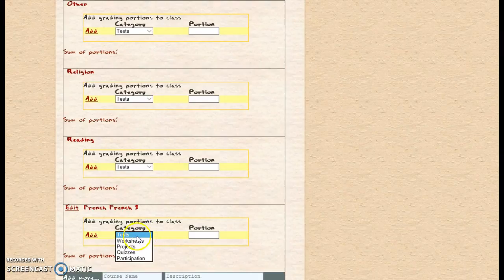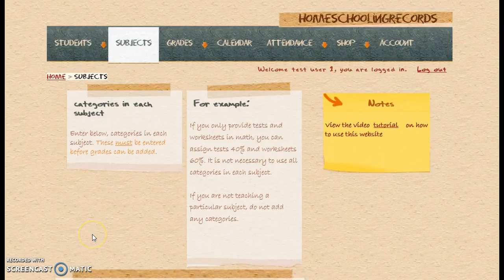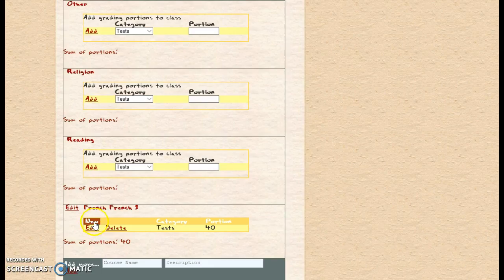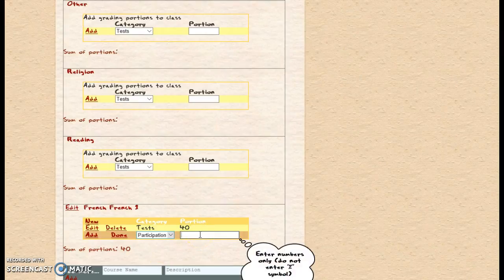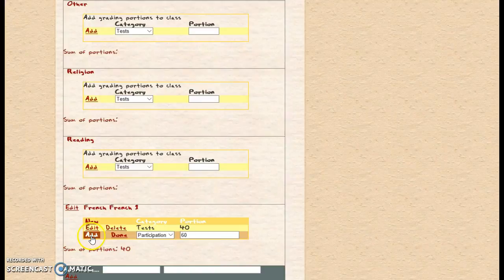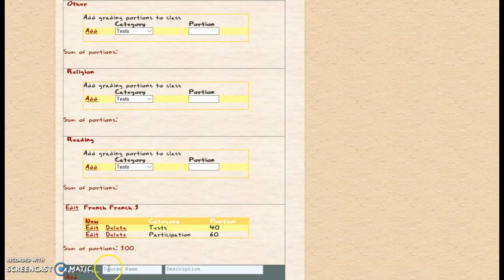For French, I'm going to have some tests. As far as proportions, we need a hundred percent total. My tests are going to be equal to forty percent, so I'm going to click Add. Then I'm going to add a new one — the next one is actually going to be my participation, and that's going to be sixty percent. Okay, and I'm done with that. So now I've got a hundred percent of my proportions.